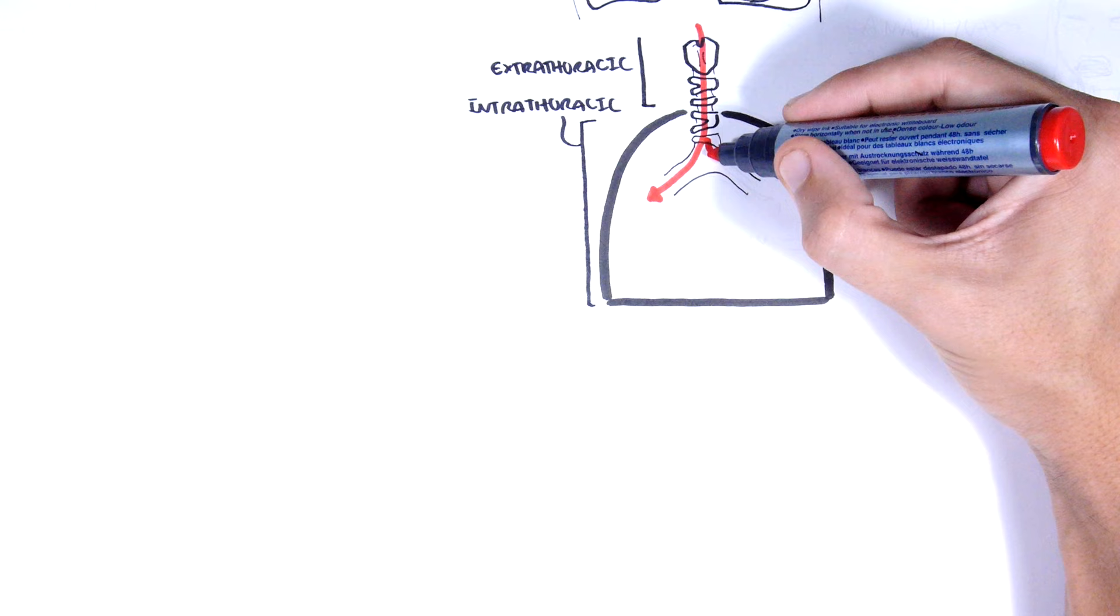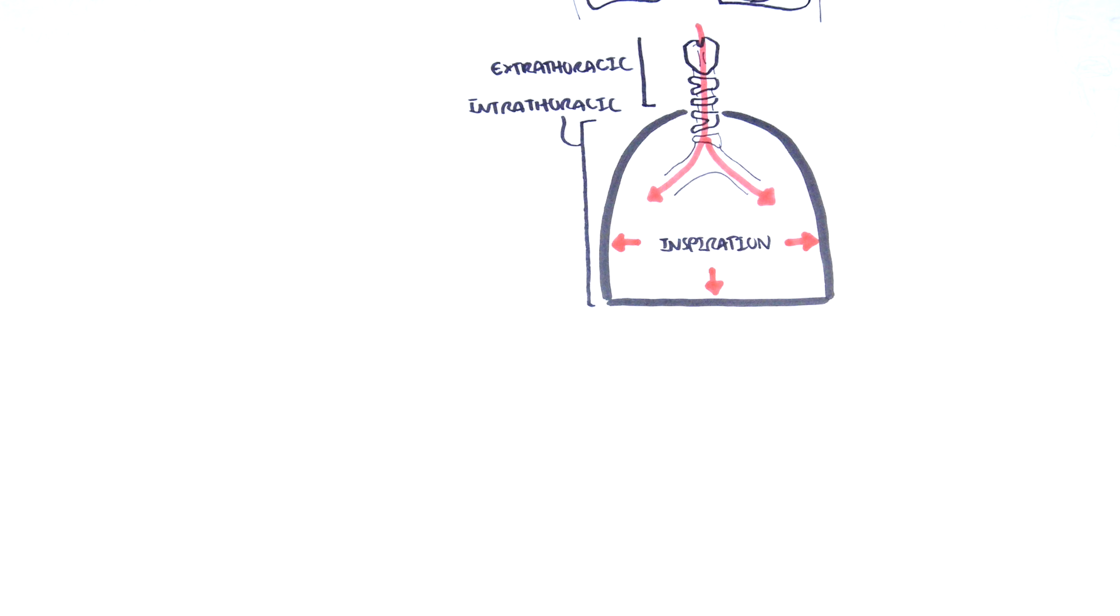During inspiration, air flows from the extrathoracic region into the intrathoracic region. When there is some airway obstruction anywhere in the extrathoracic region, this will cause an inspiratory stridor. Most causes of stridor are found in the extrathoracic region.